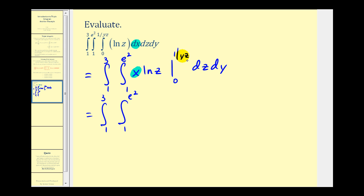So we'll first replace x with one over yz, so we'll have natural log z over yz, and then when x is zero, this would be zero.